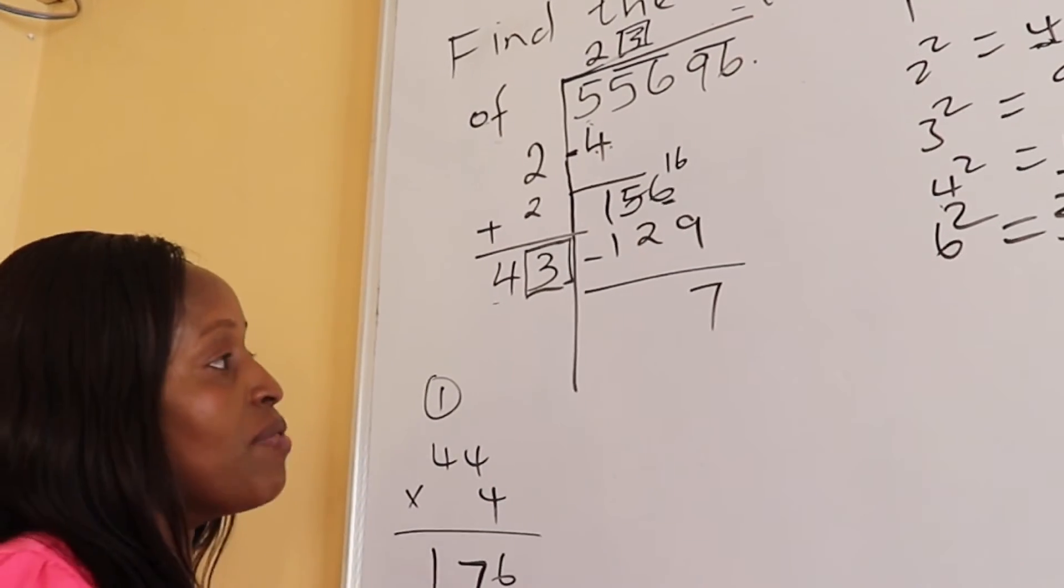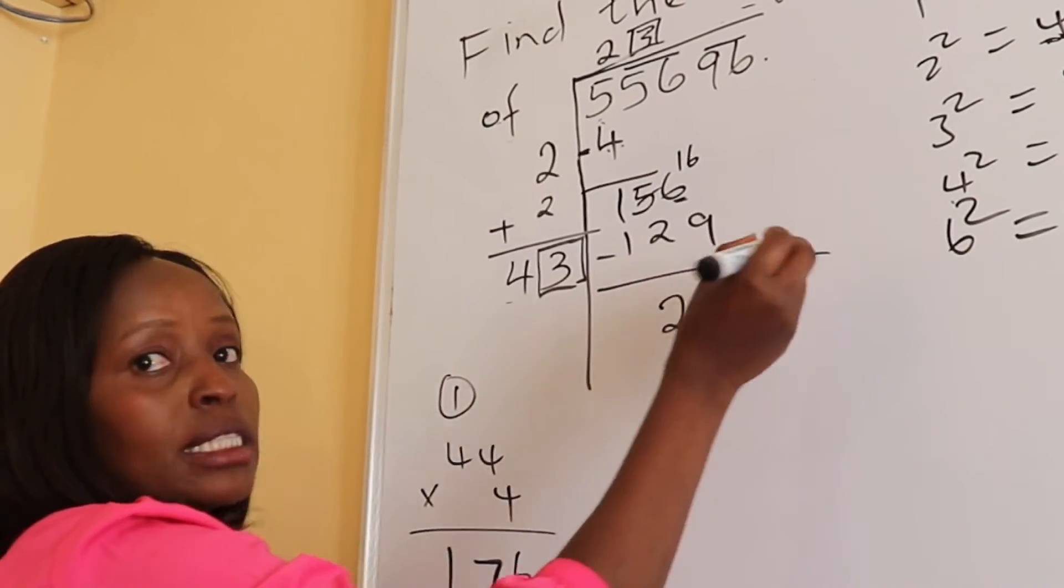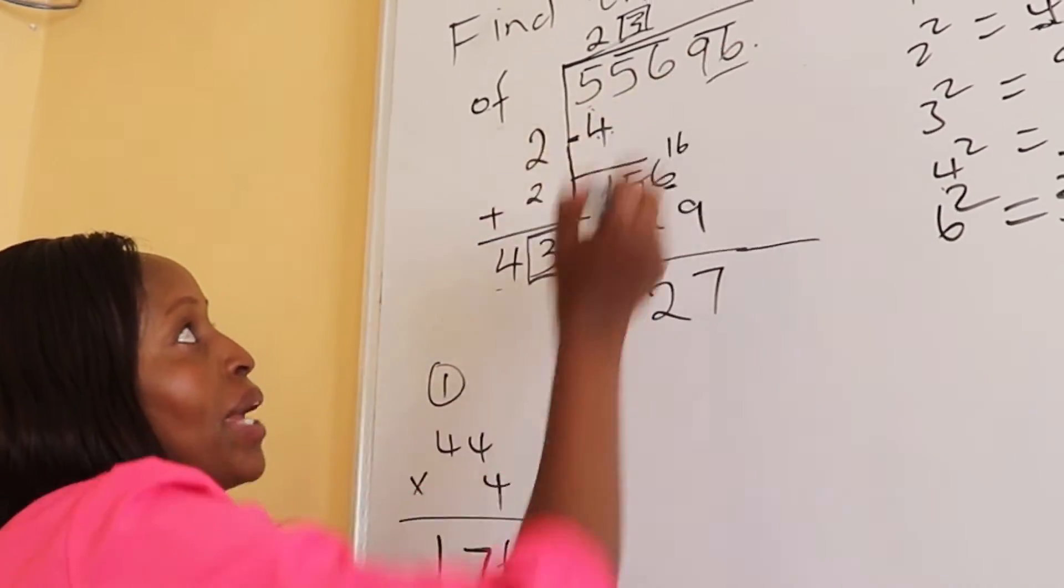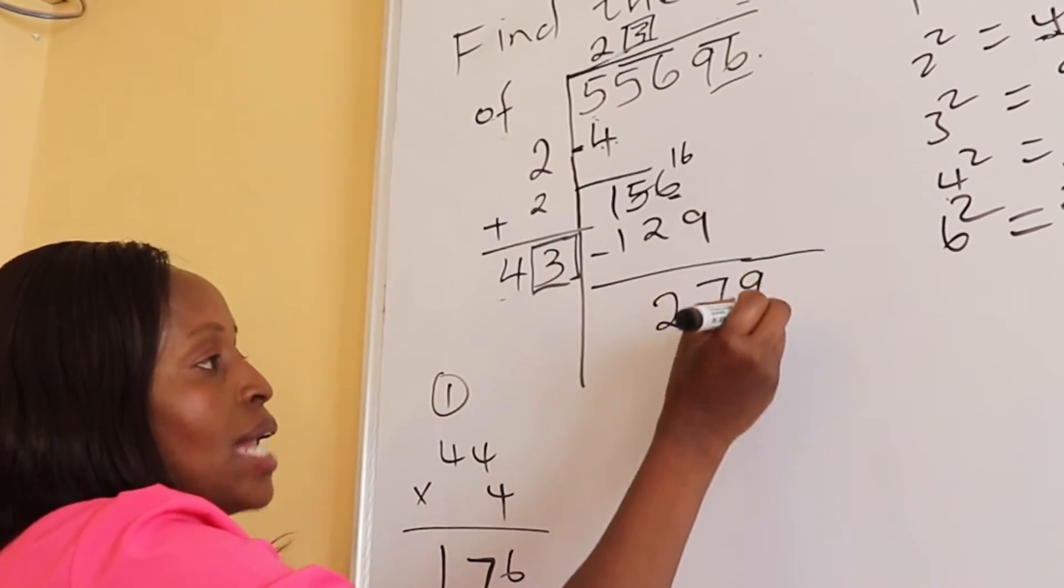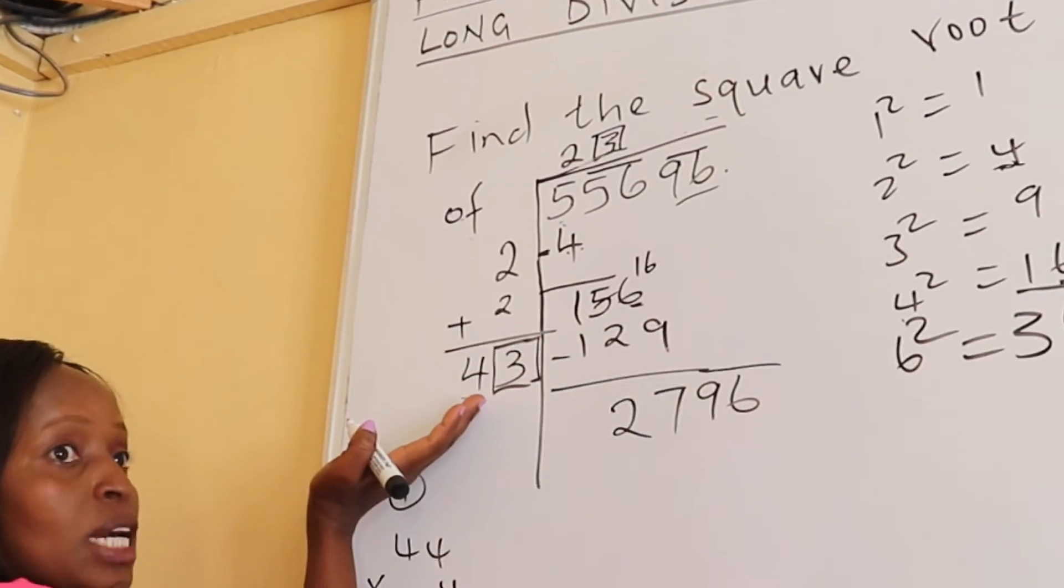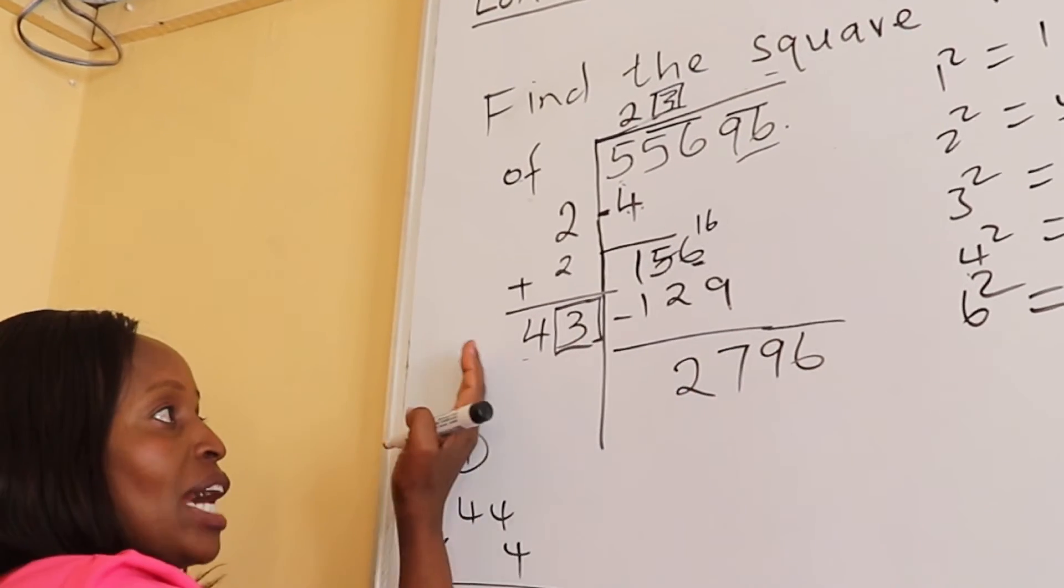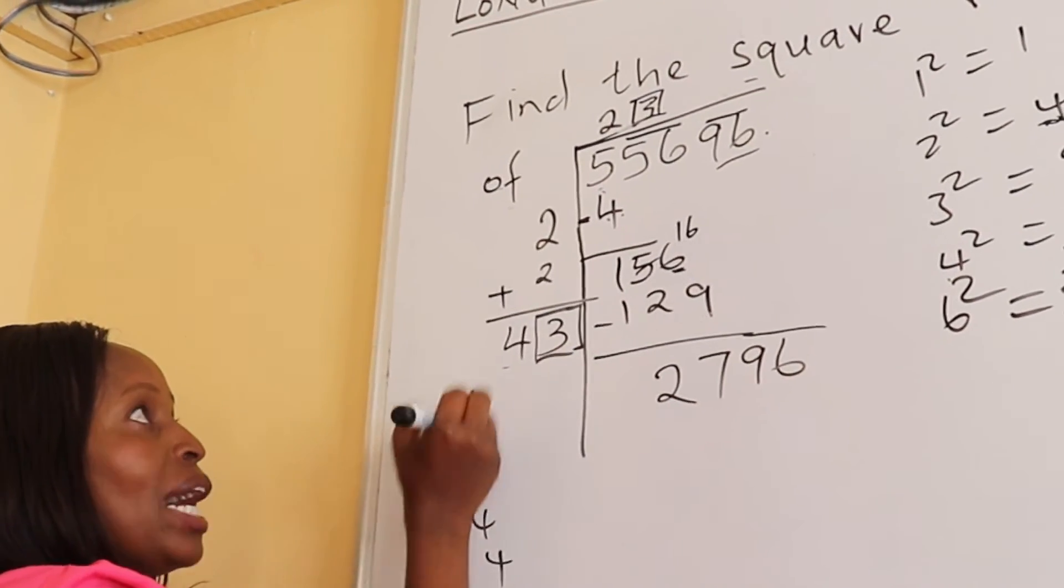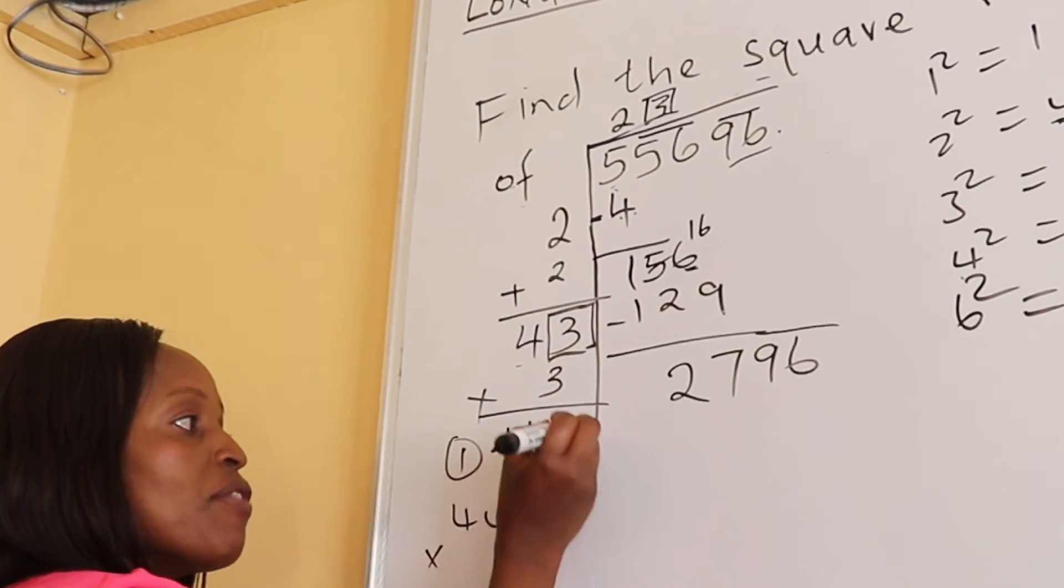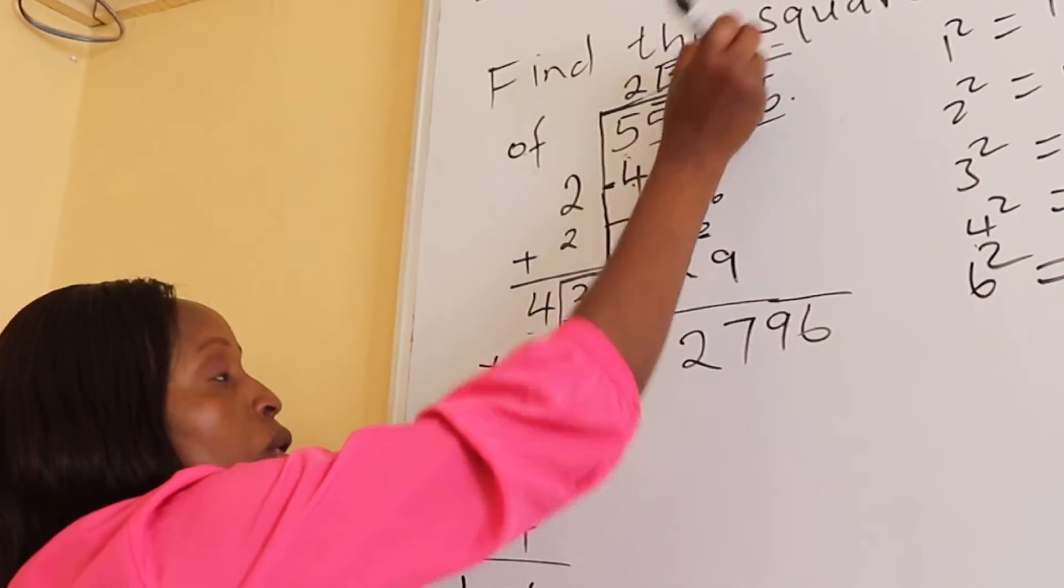6 take away 9 is 7, 15 take away 12 is 2, so we get 27. After that we drop the other pair which is 96. But remember, after we took away here, we never added here. The rule says after subtracting on the right hand side, on the left hand side we add, and we add the quotient that we got. This will be 46, leaving a gap here for a box, and also here put a box.